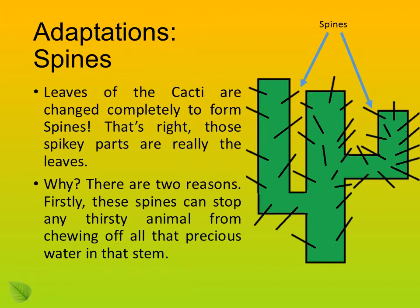There are two reasons why leaves became spines. Firstly, these spines can stop any thirsty animal from chewing off all that precious water stored in the stem. It doesn't mean that animals haven't adapted so that they can bear the spines — but that's a whole different topic. Let's have a look at the second reason.